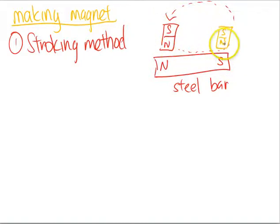Stroke with north pole here, and when it leaves, this will become a south pole. This is what we term the single touch method.